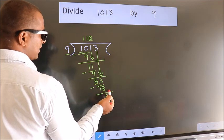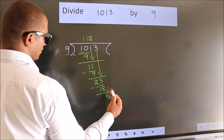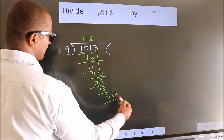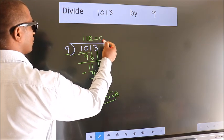No more numbers to bring it down. So we stop here. This is our remainder. This is our quotient.